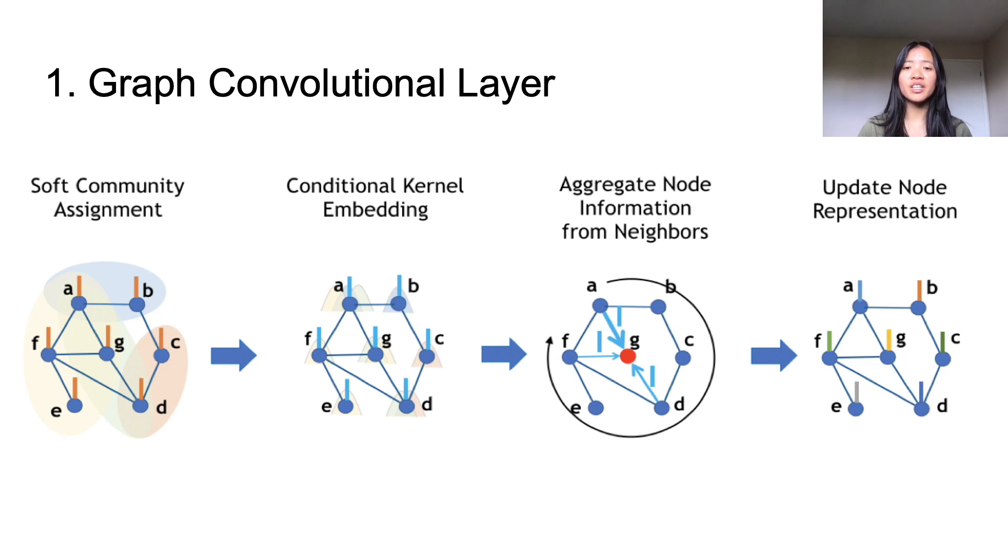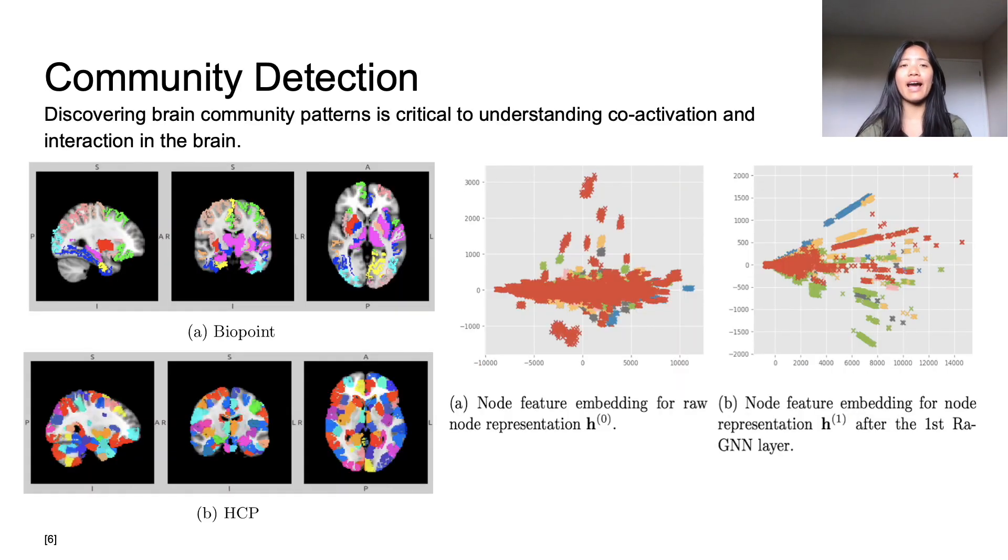By analyzing the features of the node itself and its surrounding nodes, the convolutional layer is able to identify communities where nodes are more densely connected to each other than to the rest of the network. Using this information, it is able to update the data associated with each node and cluster similar ones together. That is exactly how we're able to discover brain community patterns, which is critical to understanding co-activation and interactions in the brain.